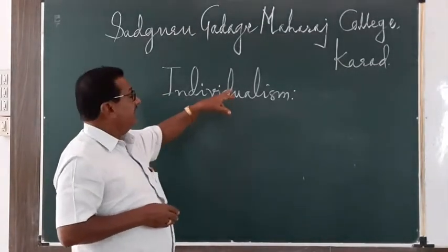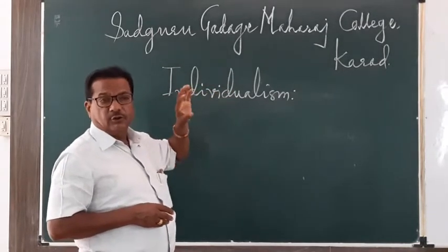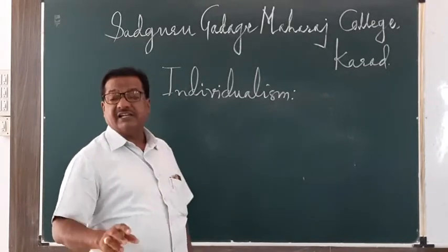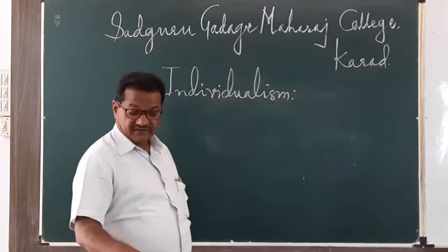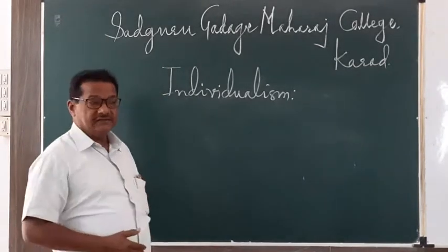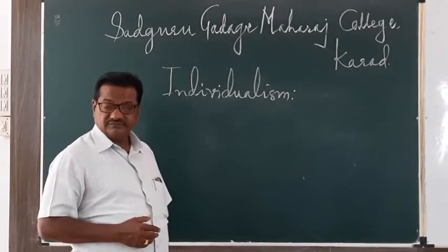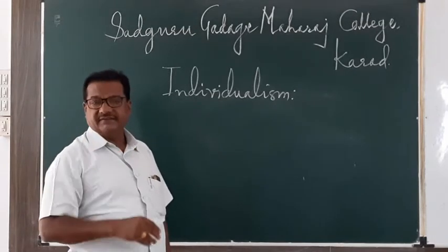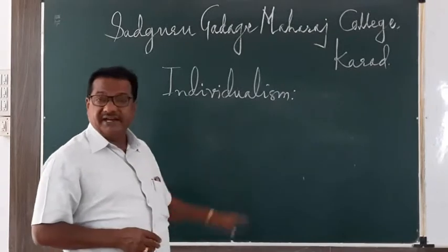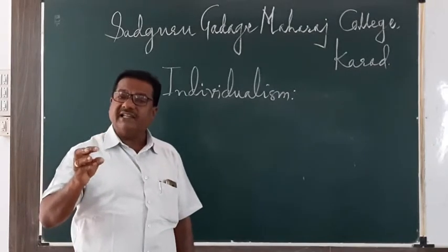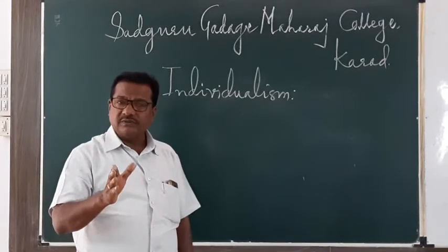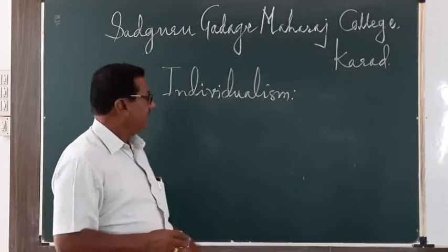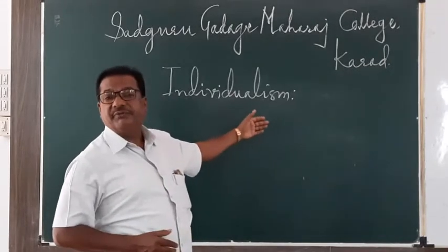When we contrast romantic poetry with neoclassical poetry of the 18th century, we find neoclassical poets such as Alexander Pope, John Dryden, and Dr. Samuel Johnson were not free to write anything freely. 18th century poets were supposed to write their poetry according to strict rules and regulations. They had no freedom of form and no freedom of theme.